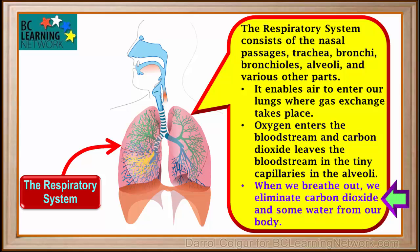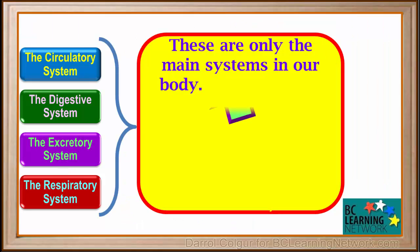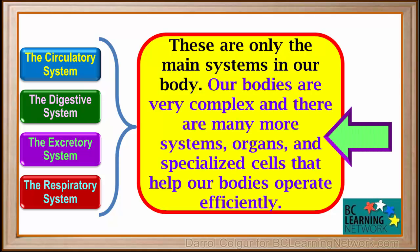And when we breathe out, we eliminate carbon dioxide and some water from our body. These are only the main systems of our body. Our bodies are very complex, and there are many more systems, organs, and specialized cells that help our bodies operate efficiently. You will learn about these in this course, and other courses you take in Biology.